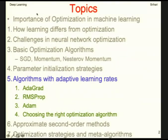Algorithms with adaptive learning rates: AdaGrad, RMSProp, and Adam. The key insight is that the learning rate is the most difficult hyperparameter — it's sensitive to some directions in parameter space and insensitive to others. Momentum helps but introduces another hyperparameter. If sensitivity is axis-aligned, a separate learning rate per parameter, adjusted throughout learning, is better. Older approaches include the delta-bar-delta algorithm (full-batch only). Modern mini-batch adaptive methods are AdaGrad, RMSProp, and Adam.